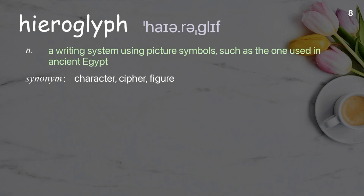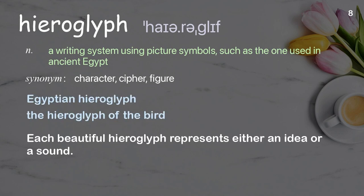A writing system using picture symbols, such as the one used in ancient Egypt. Examples: Egyptian hieroglyph, the hieroglyph of the bird. Each beautiful hieroglyph represents either an idea or a sound.